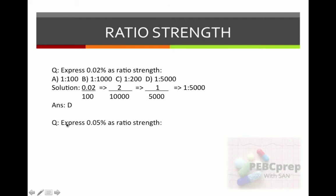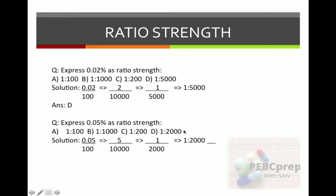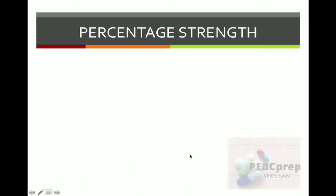Another example: express 0.05% as ratio strength. Options: A) 1:200, B) 1:2000, C) 1:200, D) 1:2000. Solution: 0.05 over 100 — remove the zeros and move to the denominator: 5 over 10,000. Divide to get 1 over 2000. That is the ratio strength.